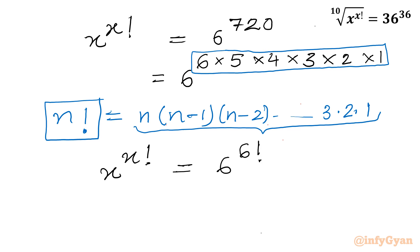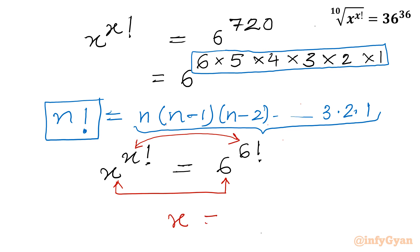Comparing both sides, we can conclude x should be equal to 6. So the final result is x = 6. This is our Method 1.